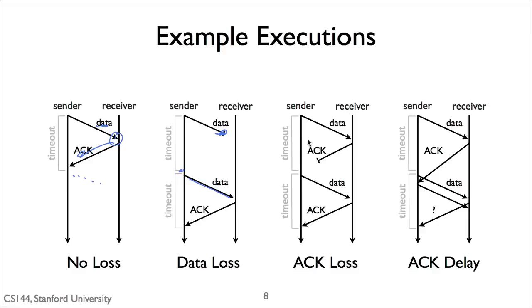Here's a third case where the data is successfully delivered, but the acknowledgement is lost. Now the sender is in the wait for ACK state, it times out, it resends the data, and then this causes the receiver to send a new acknowledgement, at which point the sender gets the acknowledgement and continues as in the first case.